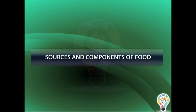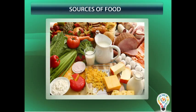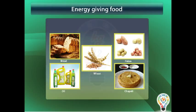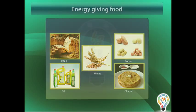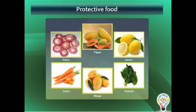We already know that our food has different chemical substances called nutrients. On the basis of nutrients, food can be divided into three groups: energy giving food, body building food, and protective food.